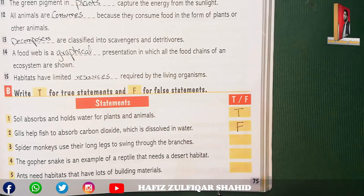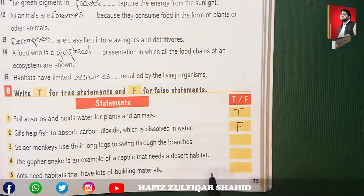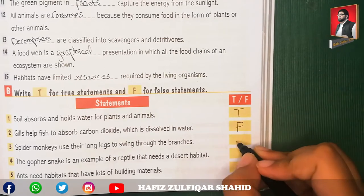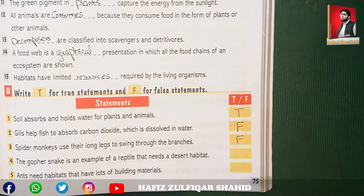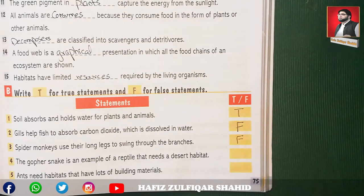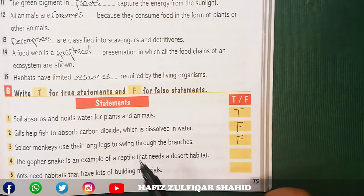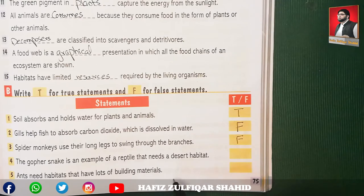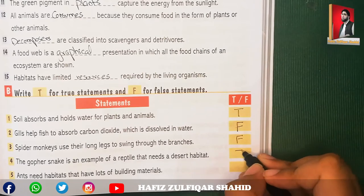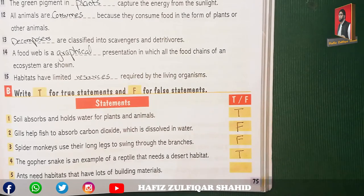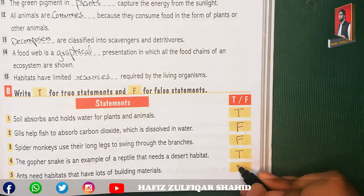Number three: spider monkey uses its long legs to swing through the branches — this is false, because the spider monkey uses its long tail to swing through the branches. Number four: the Gopher Snake is an example of a reptile that needs a desert habitat — this is true. Number five: ants need a habitat that has lots of building materials — true.